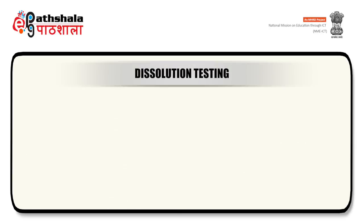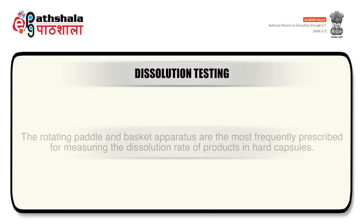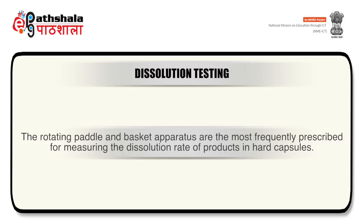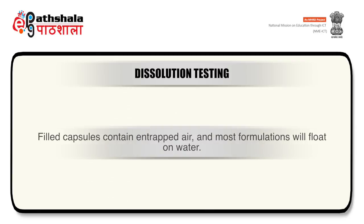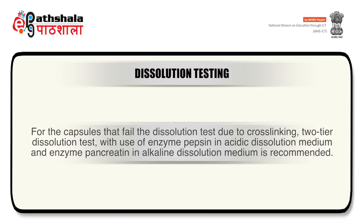Regarding dissolution testing: hard capsules are tested using the same apparatus as tablets — the rotating paddle and basket apparatus are most frequently prescribed. Filled capsules contain entrapped air and most formulations will float on water, so devices are required to ensure they sink. For capsules that fail dissolution tests due to crosslinking, a two-tier dissolution test using pepsin in acidic medium and pancreatin in alkaline dissolution medium is recommended.